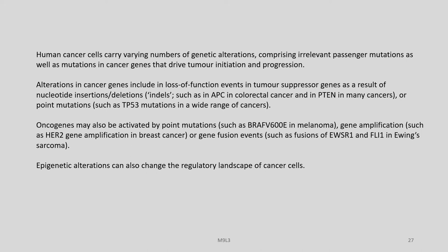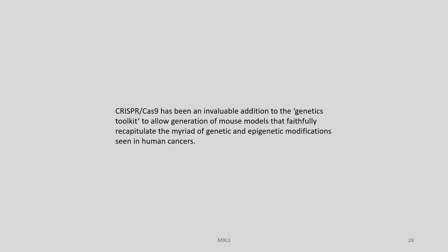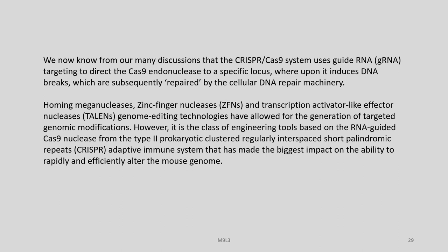Epigenetic alterations can also change the regulatory landscape of cancer cells. In the modeling of cancer, we have to imitate all these kinds of genetic changes and build up the regulatory landscape of genes and genetic elements inside cancer cells. In this context, CRISPR-Cas9 has been an invaluable addition to the genetics toolkit to allow generation of mouse models that faithfully recapitulate the myriad of genetic and epigenetic modifications seen in human cancers.